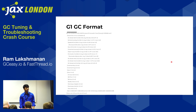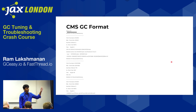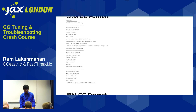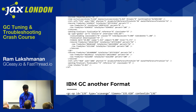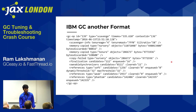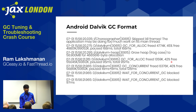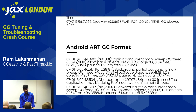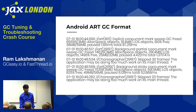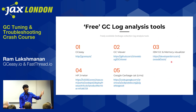This is how a G1 GC log looks, this is a CMS GC log, and this is an IBM GC log — some print in XML format. If you do Android GC analysis, there's Dalvik VM and Android ART GC log formats too. The good news is you don't have to manually understand all these different formats. Here are some free garbage collection log analysis tools you can use.